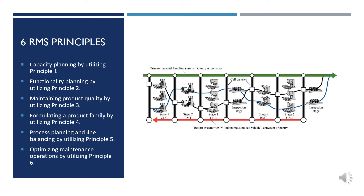Formulating a product family by utilizing principle four. In order to reduce cost and improve system efficiency, RMS are designed according to principle four: design the manufacturing system around the product family. On the operation level, operation scheduling problems are studied and optimized to sequence the production of different products in order to improve system efficiency.